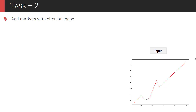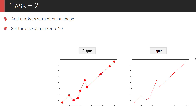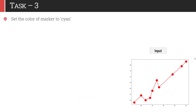The output from task 1 is the input to task 2. Your task is to add markers with a circular shape. Next, you also have to set the size of the marker to 20. So once you execute these two operations, the graph would look like this — circular markers are added and the size of markers has been set to 20.